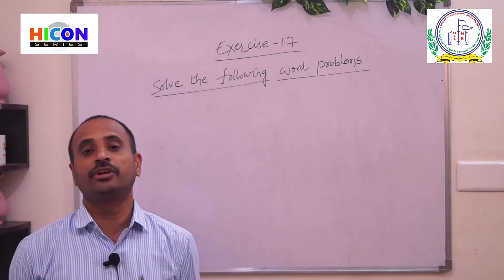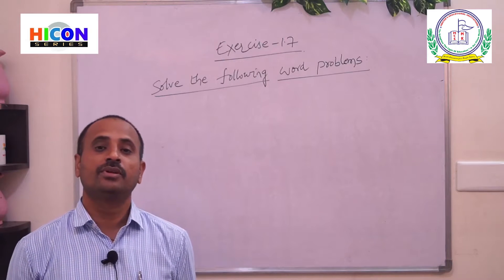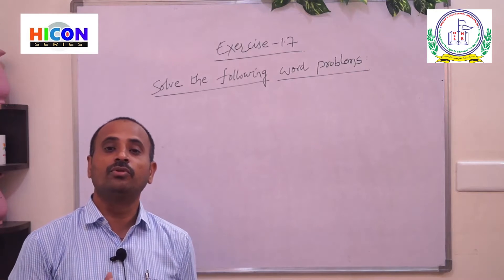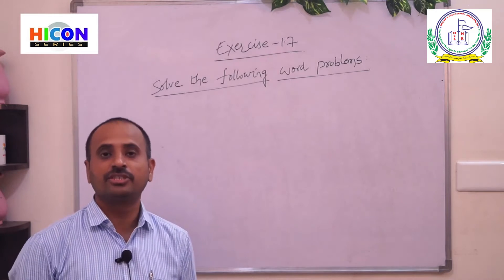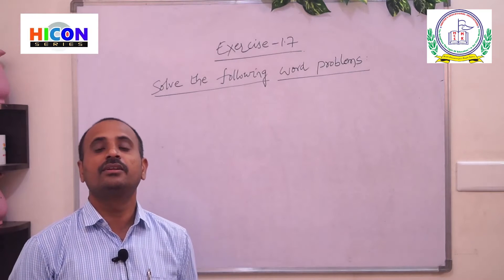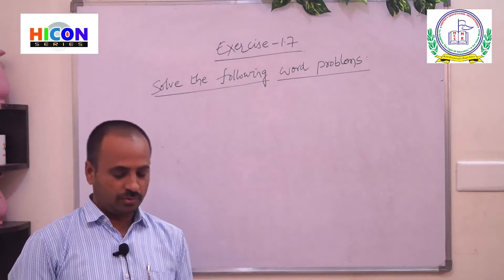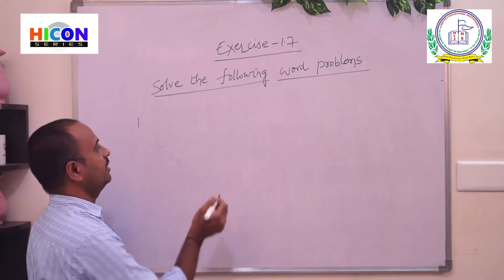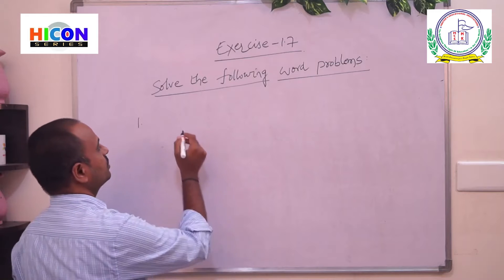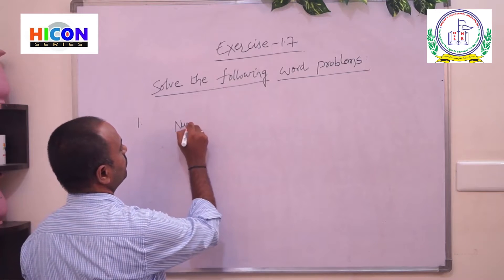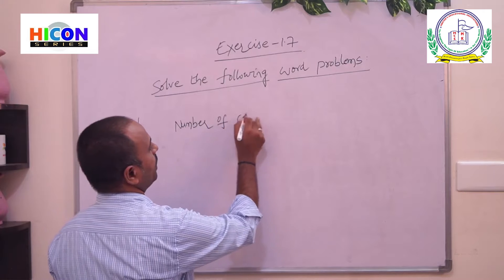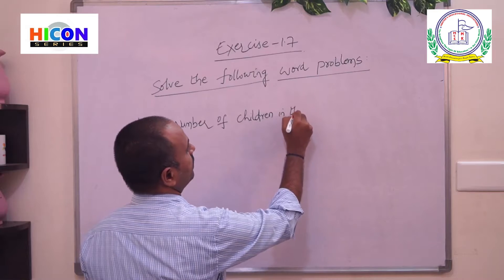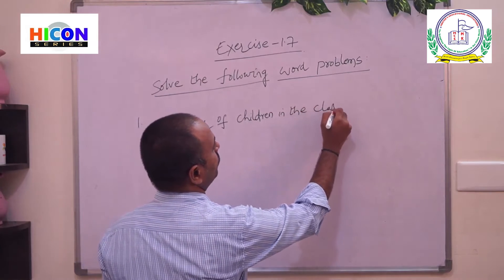By rounding the given strength to the nearest ten, you will get the number of sweets to take. So how many students are there in your class? There are 36 students. Therefore, the number of children in the class is equal to 36.